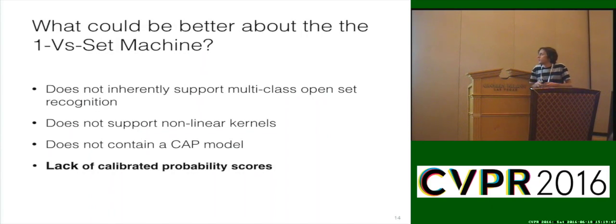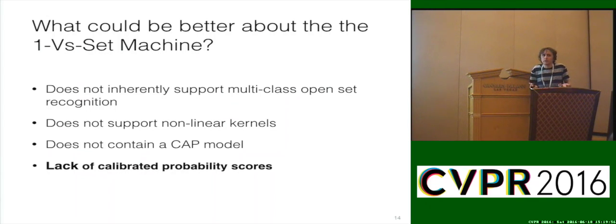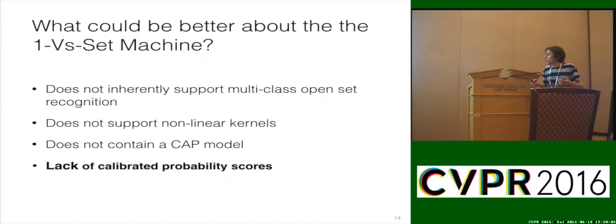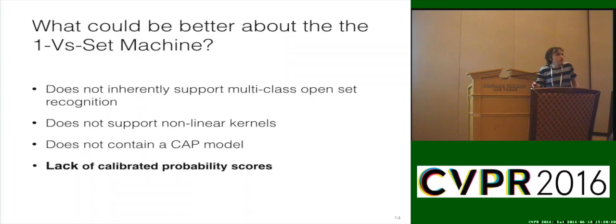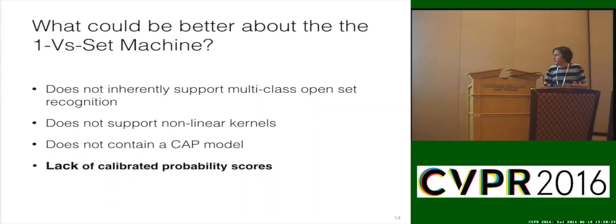This works, and we'll show you some results in terms of its performance. But of course it could be better. It doesn't inherently support multi-class open set recognition. It doesn't support non-linear kernels — it's just a linear model. It does not contain a CAP model, which is a key theoretical shortcoming of the one-versus-set machine. And it lacks calibrated probability scores — there was no EVT in this model. The only thing we're doing to reduce open space risk is adding the back plane and creating the slab.